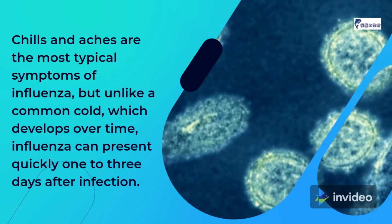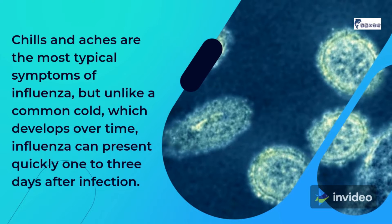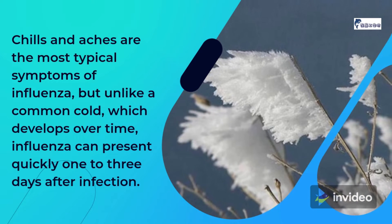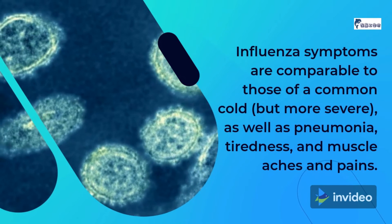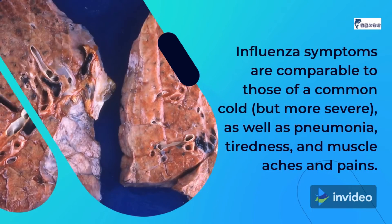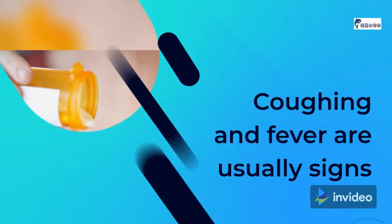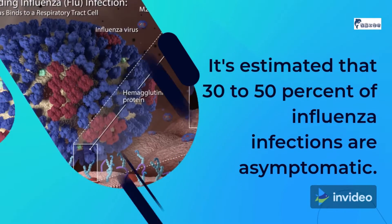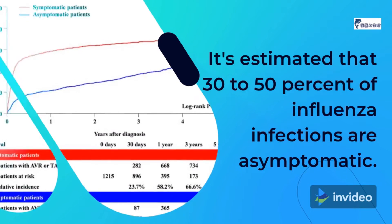Chills and aches are the most typical symptoms of influenza, but unlike a common cold, which develops over time, influenza can present quickly, 1–3 days after infection. Influenza symptoms are comparable to those of a common cold, but more severe, including fever, pneumonia, tiredness, and muscle aches and pains. Coughing and fever are usually signs of influenza. It's estimated that 30–50% of influenza infections are asymptomatic.